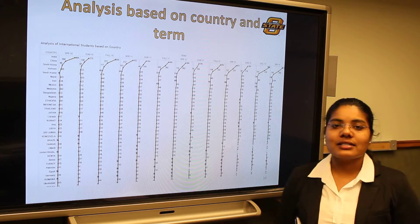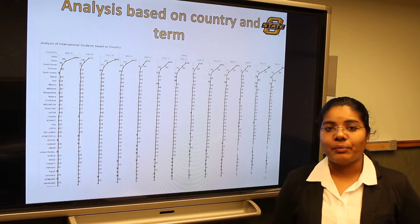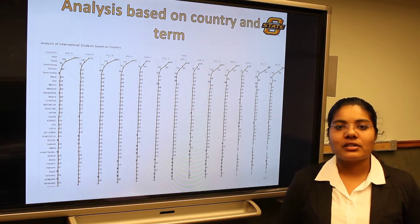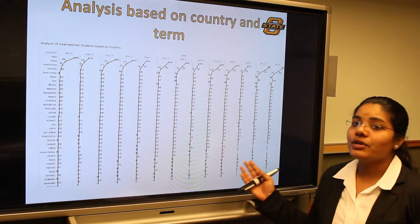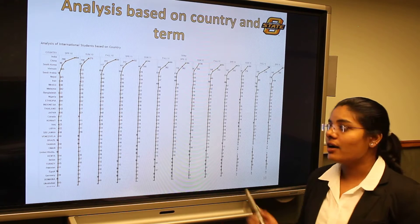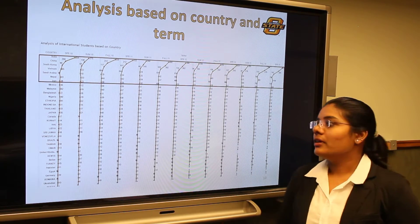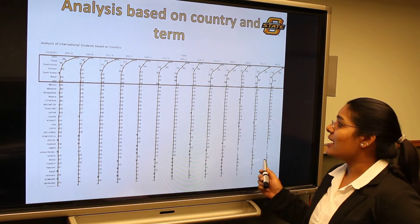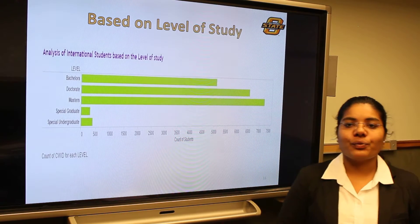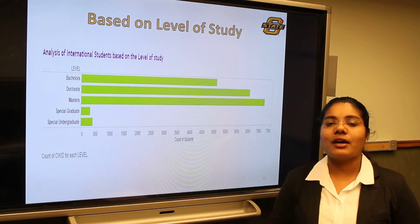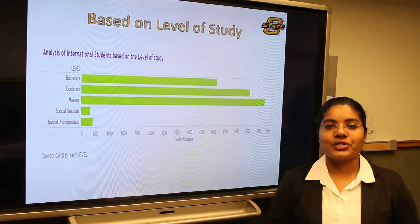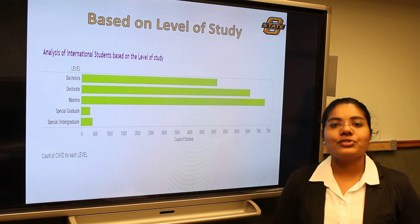Let us consider the analysis of where these students are coming from — the various countries involved in the international population at OSU. There are about 97 countries represented, of which we could only show a few on these slides. The top countries contributing to OSU's international strength are India, China, South Korea, and Vietnam. The highest number of students at OSU are pursuing their masters, showing that international students are more attracted to master's education at OSU. This presents an opportunity to encourage students from various countries for other levels beyond just masters.